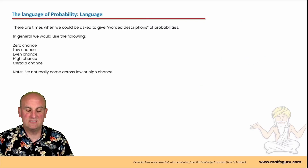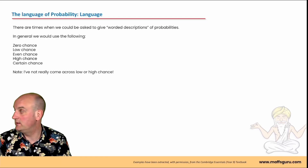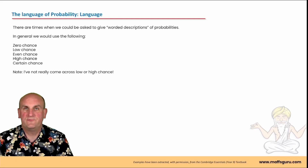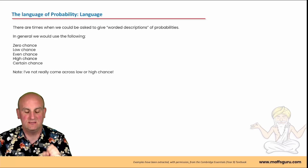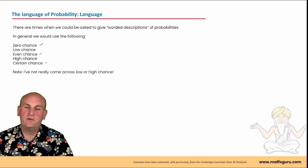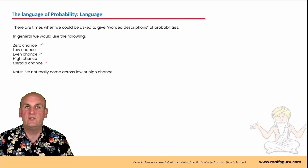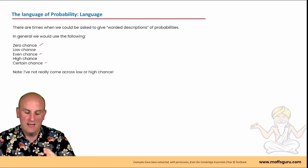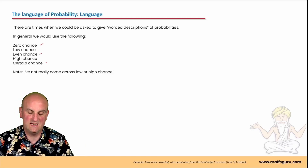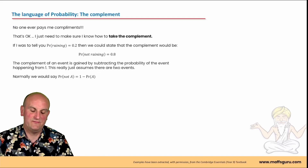The last thing here is the language of probability tells us there are times where we could be asked to give worded descriptions. In general we would use the following: zero chance, even chance, and certain chance. Low chance is somewhere between zero and 50%, and high chance is somewhere between 50% and 100%.